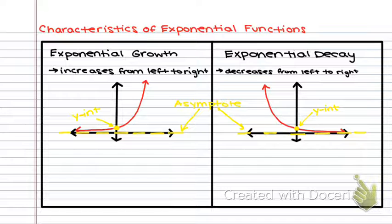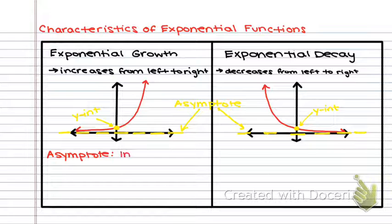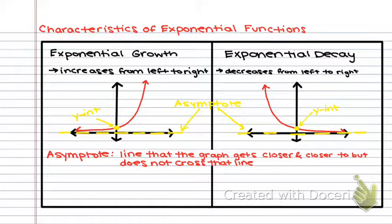It's called an asymptote, and we're going to write down the definition. An asymptote is a line that the graph gets closer and closer to but does not cross. You can see my growth function and my decay function get closer and closer to that asymptote line but do not cross it.